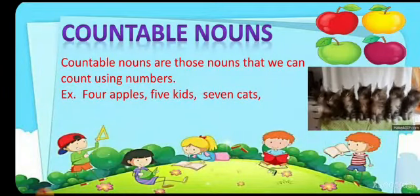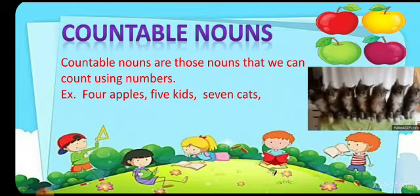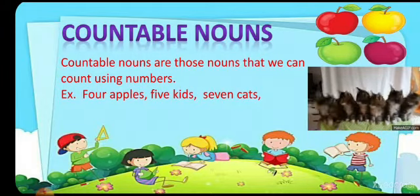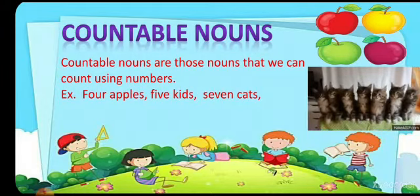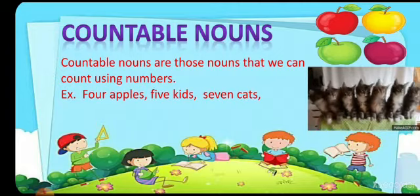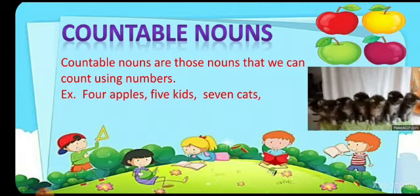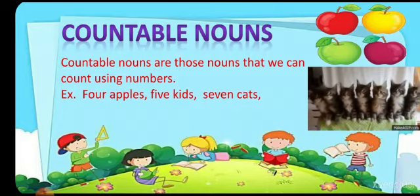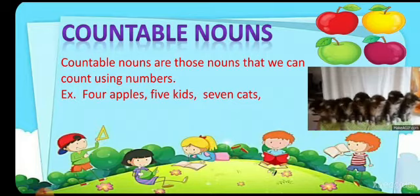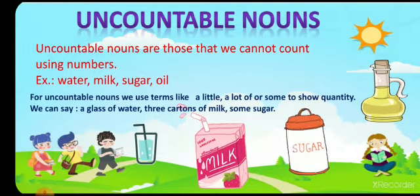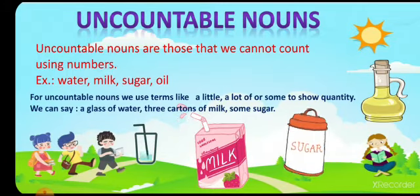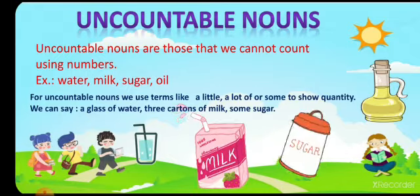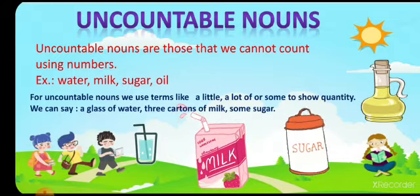Countable nouns are those that we can count easily using numbers. For example: 4 apples, 5 kids, 7 cats. Uncountable nouns are those that we cannot count using numbers — water, milk, sugar, oil.